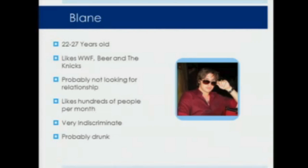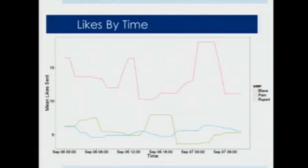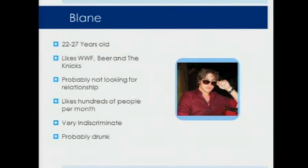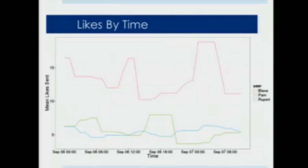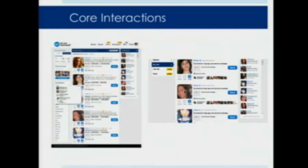The main reason I wanted to highlight these personas is because they all have very different interactions on the site, so they have to be recommended to in different ways. Here are Pam and Rupert sending just a few likes per hour, and here's Blaine sending a lot more — around 1 a.m. on Friday night, even more. We can't just train a model on the likes they're sending out because for Rupert the data is too sparse, and for Blaine his data is useless.